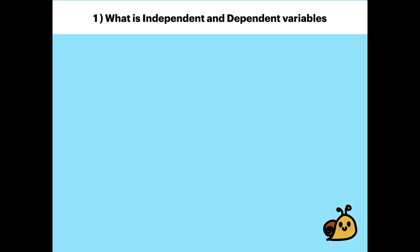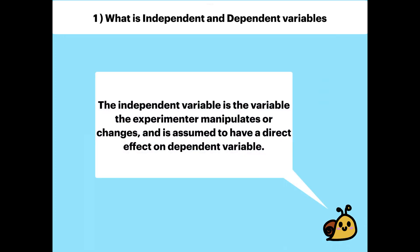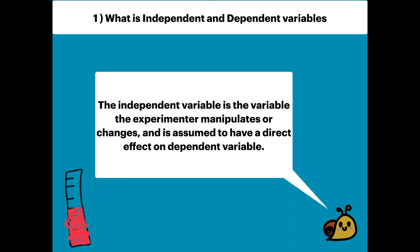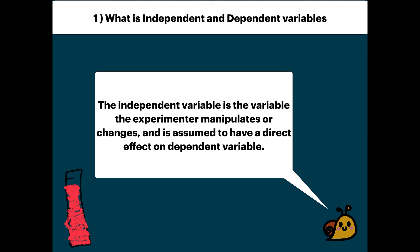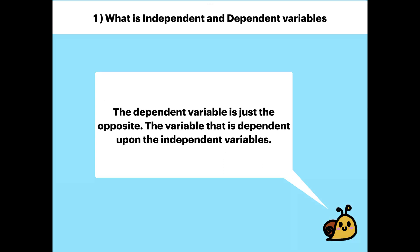So, what is independent and dependent variable? The independent variable is a variable the experimenter manipulates or changes, and is assumed to have a direct effect on the dependent variable. The dependent variable is just the opposite — the variable that is dependent upon the independent variables.